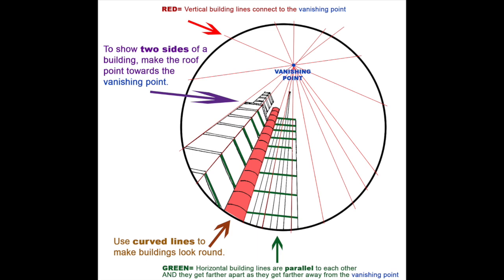If you want to make a building that looks round, all you have to do is use curved lines. They're still going to be parallel, they're still going to get farther apart as they get farther away from the vanishing point, but those curved lines are going to make it look like that whole building is round.